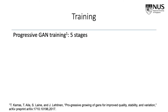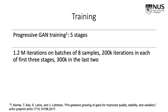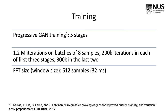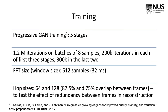The progressively growing GAN is trained in five stages, where in each stage a new layer is gradually added to the existing stack of neural nets, progressively generating a higher resolution output. We train all models for 1.2 million iterations on batches of 8 samples. The window size is chosen as 512 samples, and to test the effect of redundancy between frames in reconstruction, we trained two models with hop sizes 64 and 128.